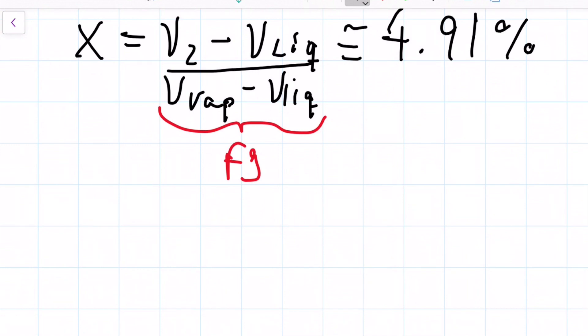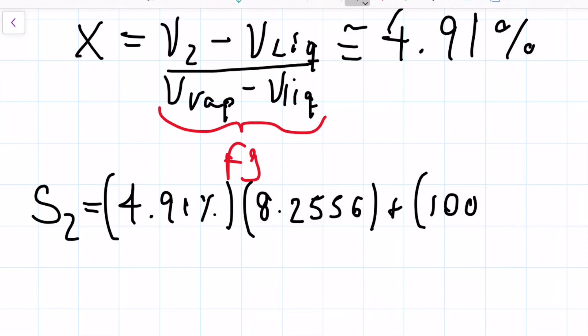So my S2 will be my 4.91 percent times the entropy for my vapor, which is 8.2556, plus 100% minus 4.91 percent times the saturated liquid entropy, which is 0.5724.